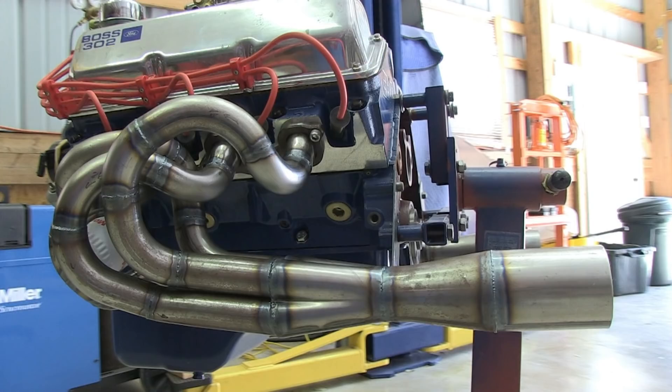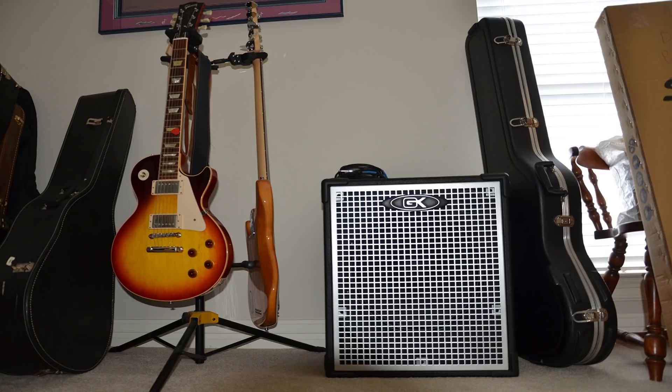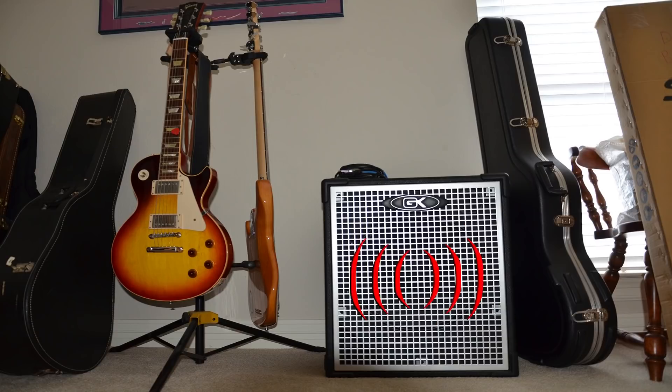So why would one need a flat plane crankshaft in a 68 Mustang? A 9000 RPM capable small block is an impressive number. Oh yeah, I forgot the sound of a flat plane crank V8.